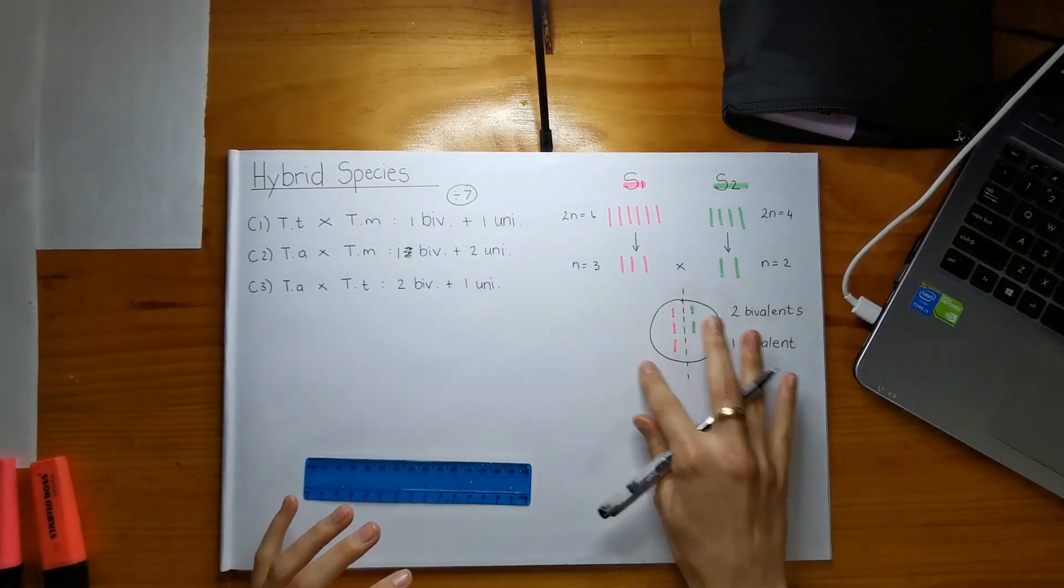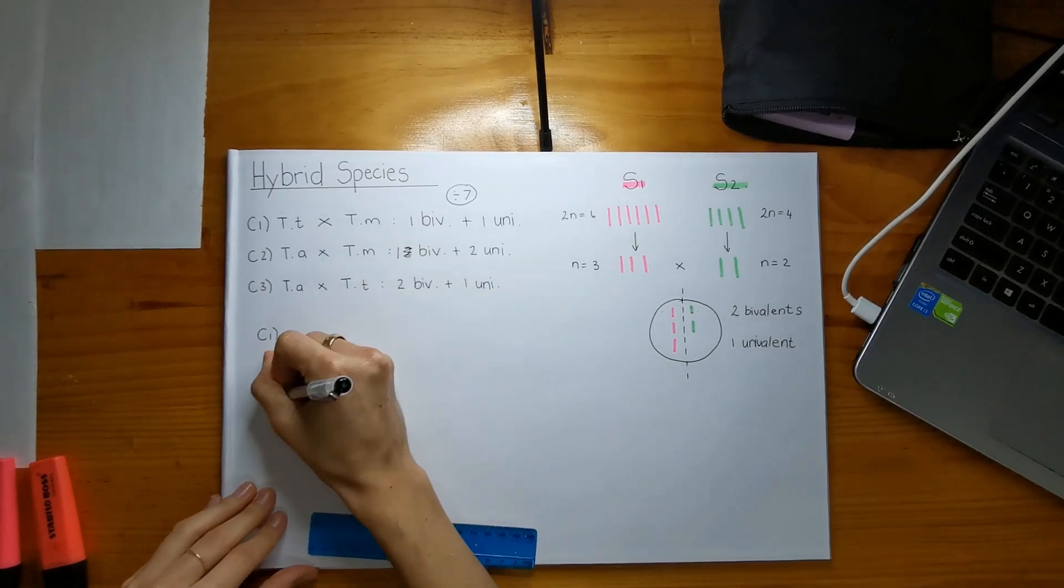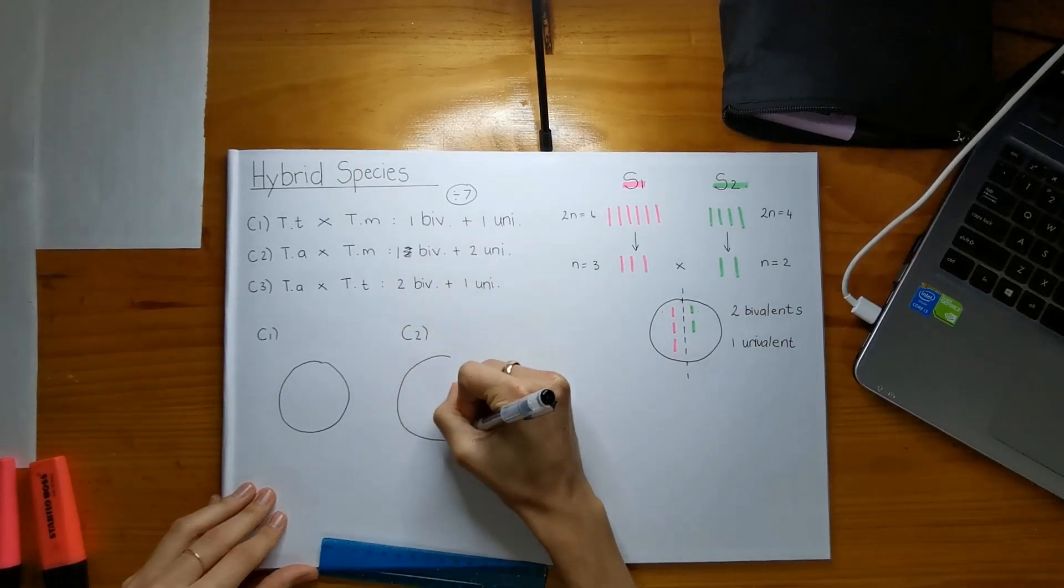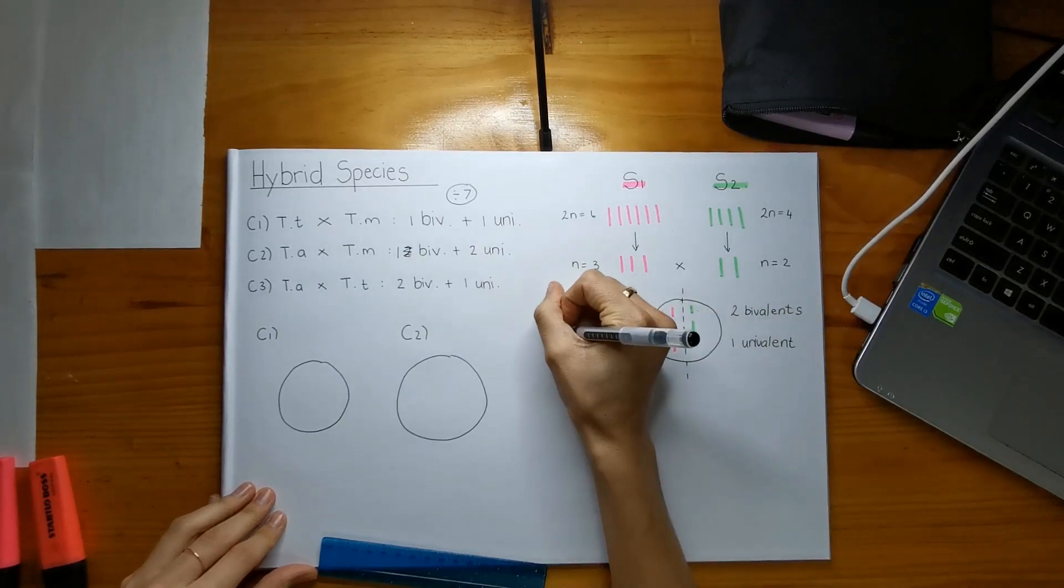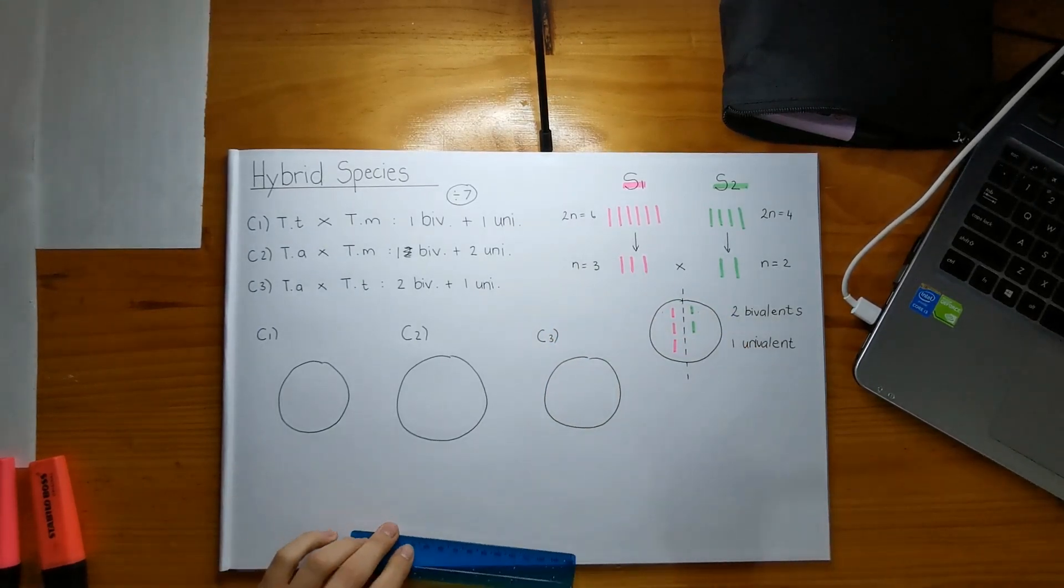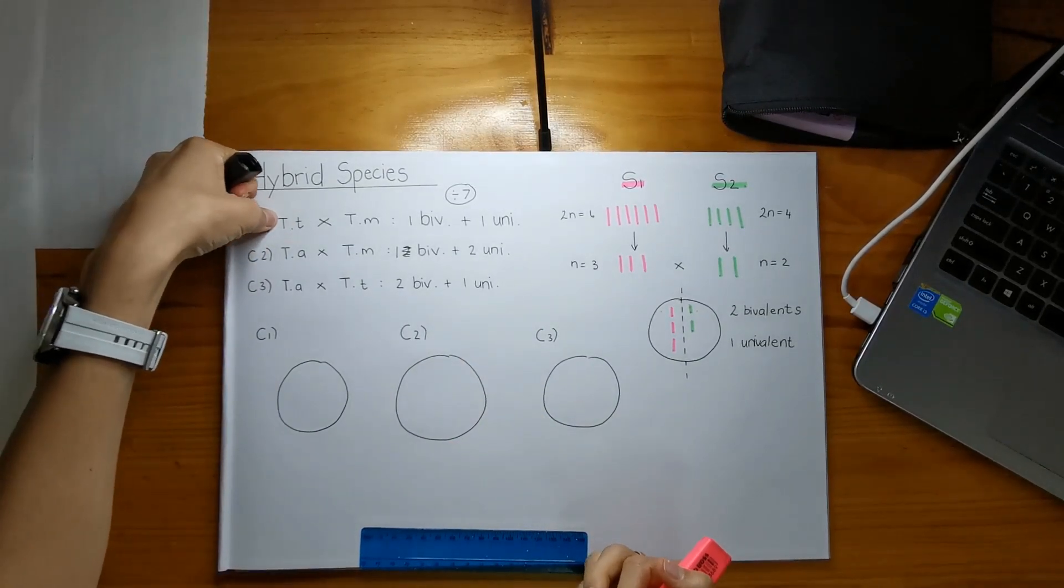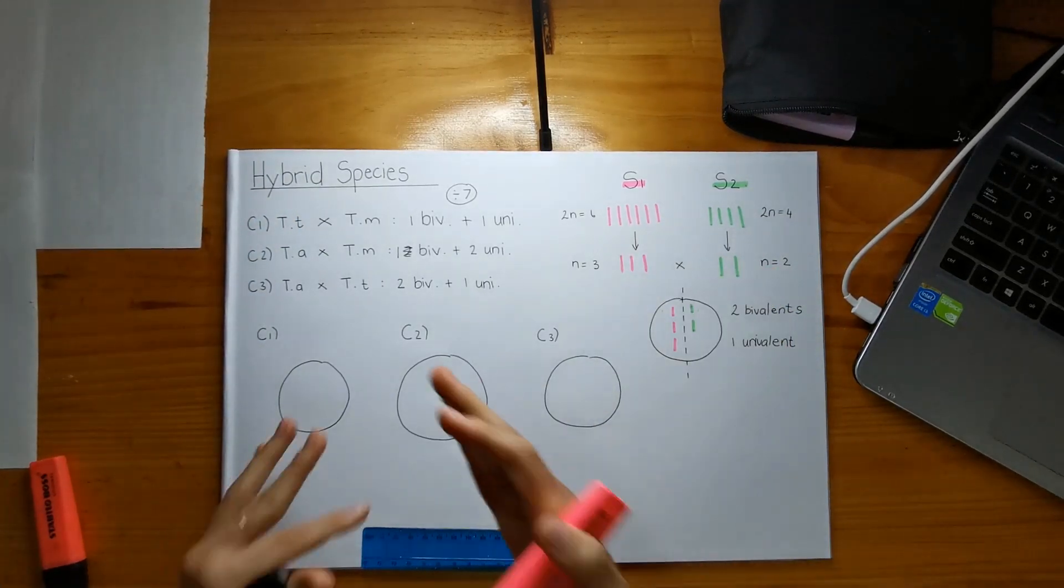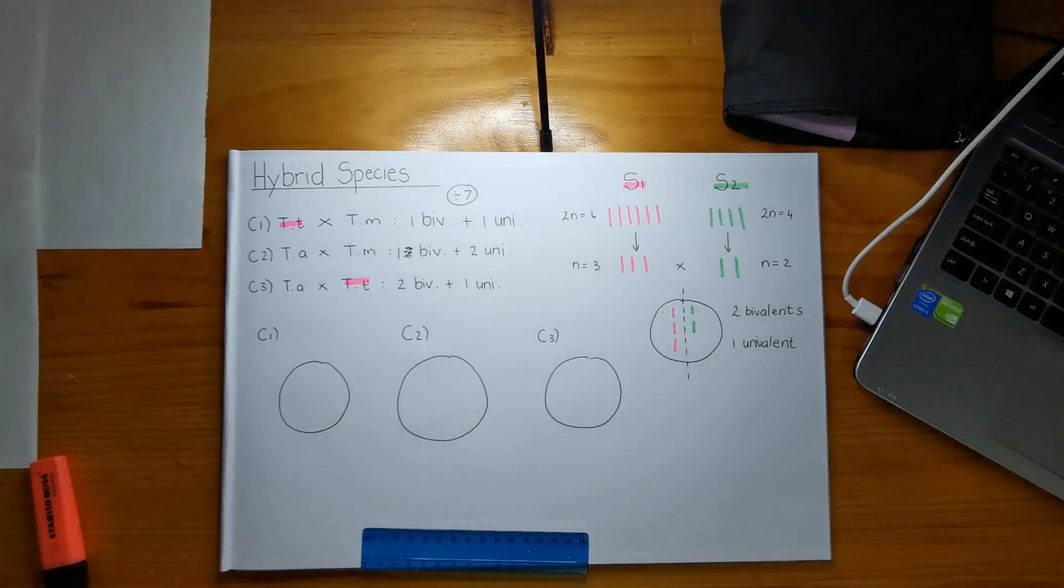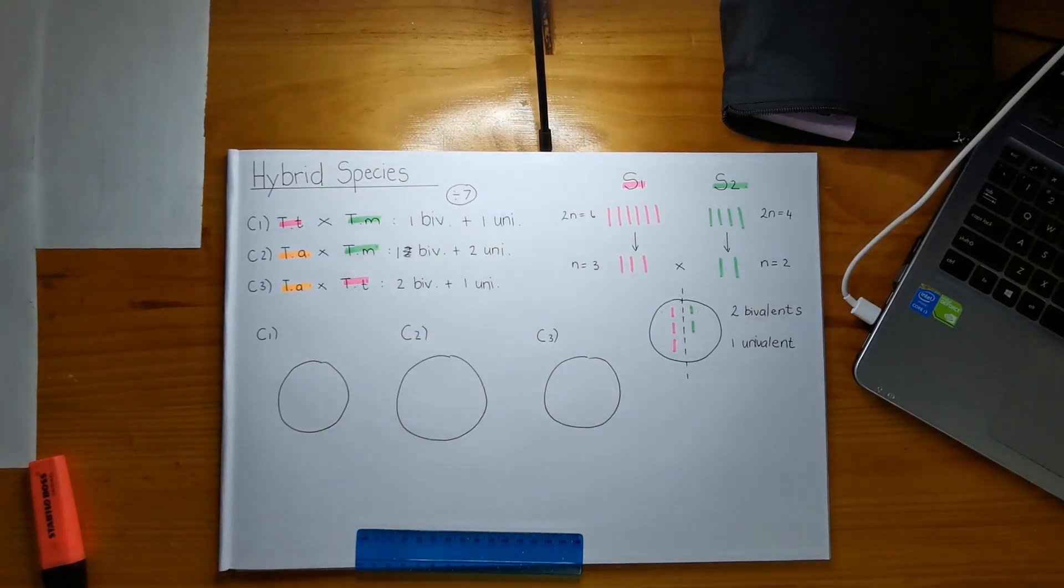Okay. So what I like to do is I like to put everything in their bubbles. So for cross one, I'm going to have a bubble. Cross two will have its own bubble. And then cross three, I hope that fits, will also have its own bubble. Right. So for example, I'm going to give all these different species, their own colors. So when I write down their chromosomes, all these chromosomes will have different colors and we'll be able to know what's all cracking on here. So TT will be my pink color. TM will be my green and TA will be my orange. Just makes life a lot easier to see.